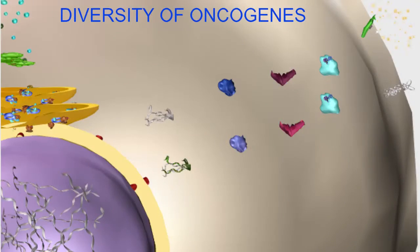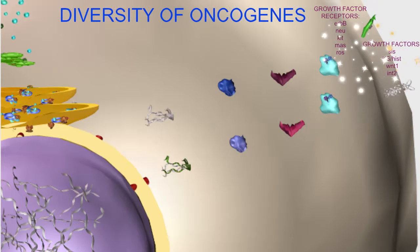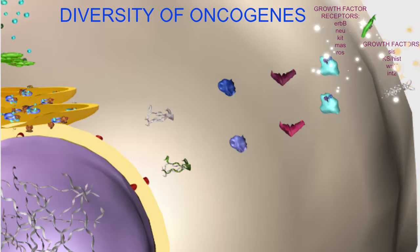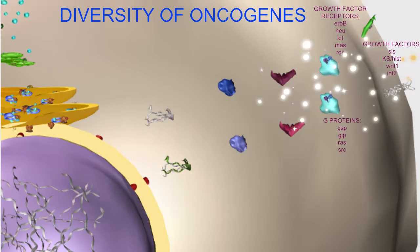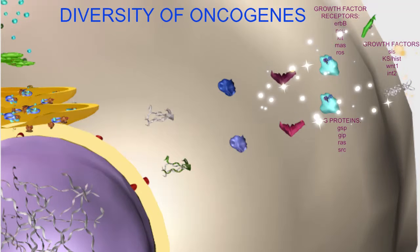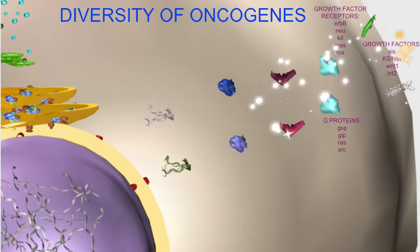For example, some oncogenes are mutated genes for growth factors sending abnormal signals for growth. Some oncogenes are mutated forms of the receptors for these growth factors. Some oncogenes are mutated versions of the G-proteins which interact with these receptors.